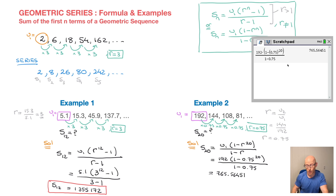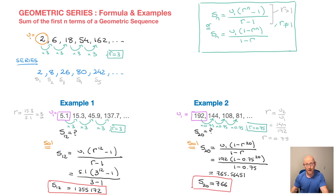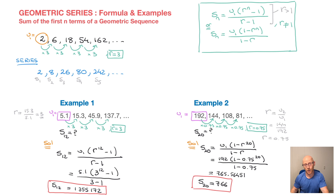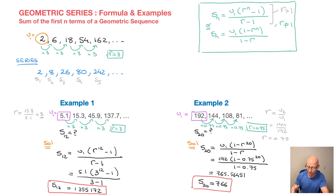It really doesn't matter which of the two formulas you use — they give the same result. It could be a good exercise to redo example 1 using the second formula, and example 2 using the first formula — you should get the same answers. So put simply, you can't go wrong. That's it for this video on geometric series and calculating the sum of the first n terms of a geometric sequence. If this helped, please hit like, drop a comment below, and subscribe to this channel.